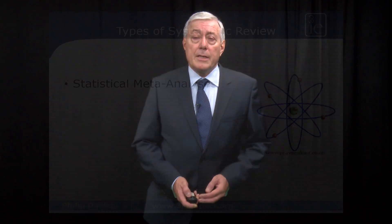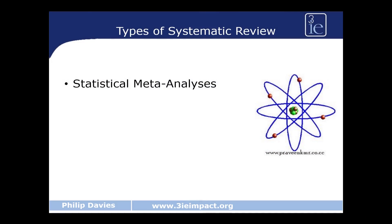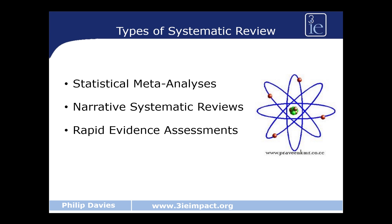There are a number of types of systematic review. Today I'm just going to cover four of them: statistical meta-analyses, narrative systematic reviews, rapid evidence assessments, and qualitative synthesis.